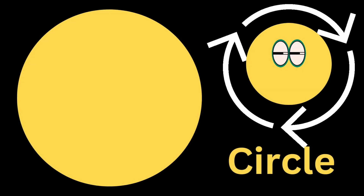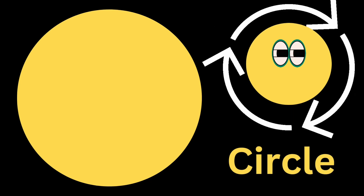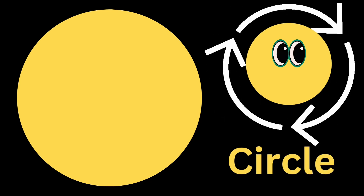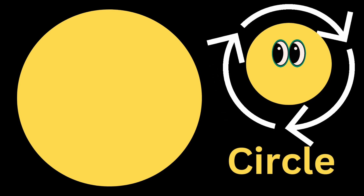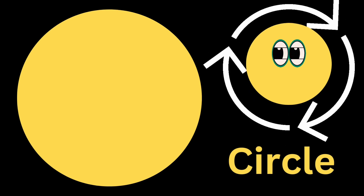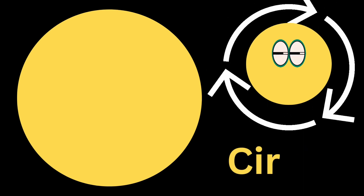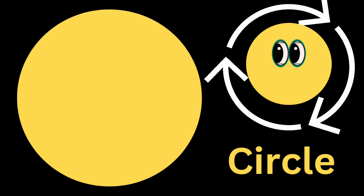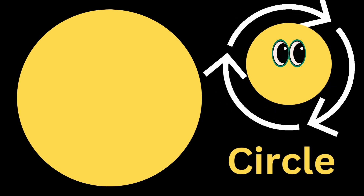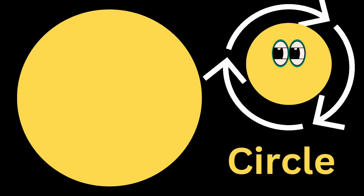Circle. A circle is a round-shaped figure that has no corners or edges. A circle is a shape that is perfectly round. It looks like the outline of a ball or a pizza.